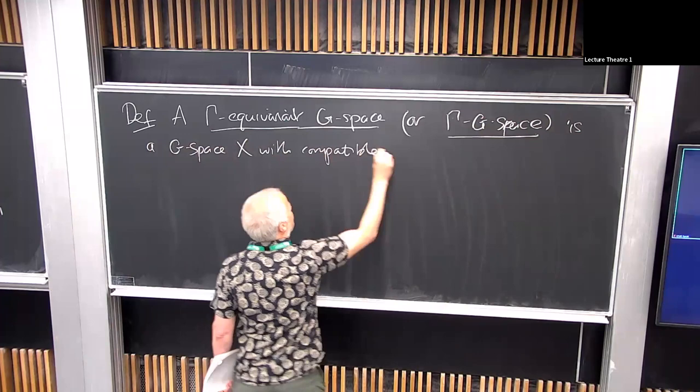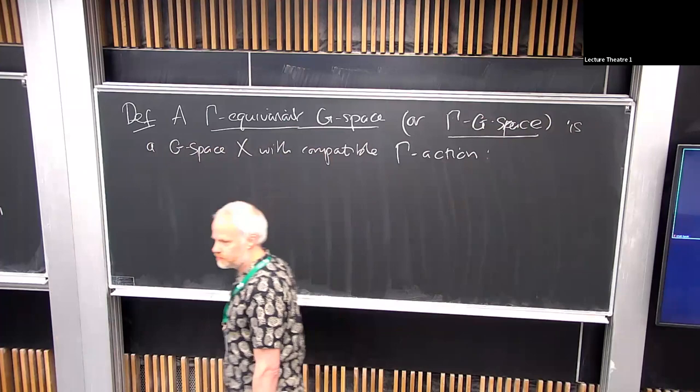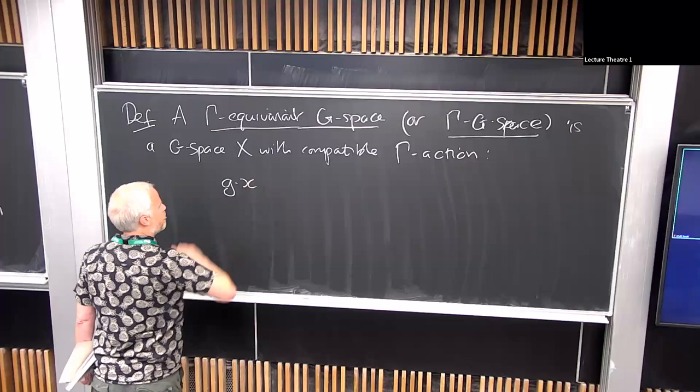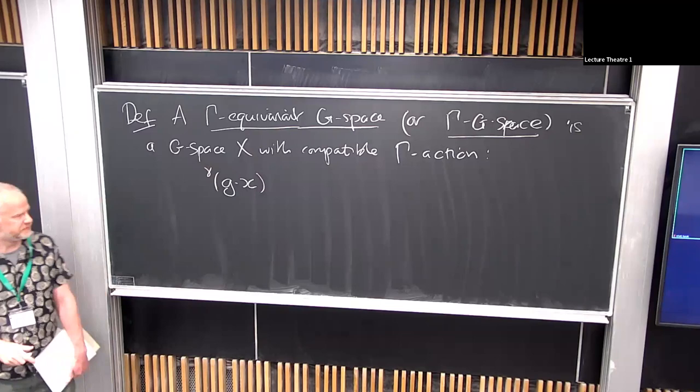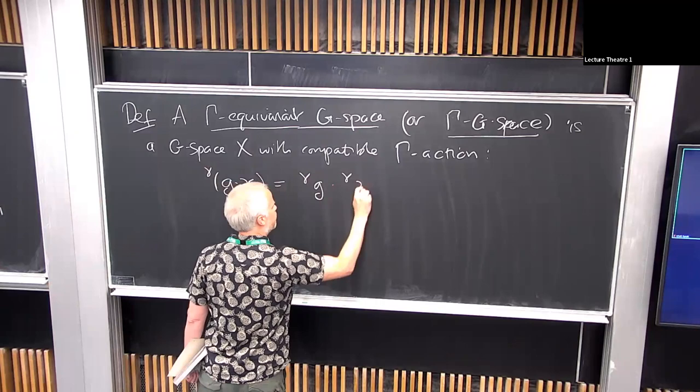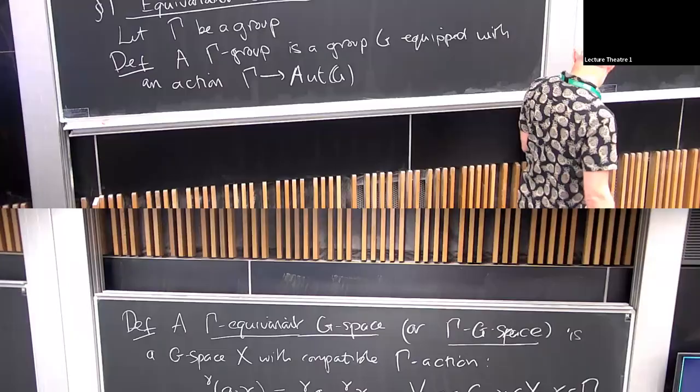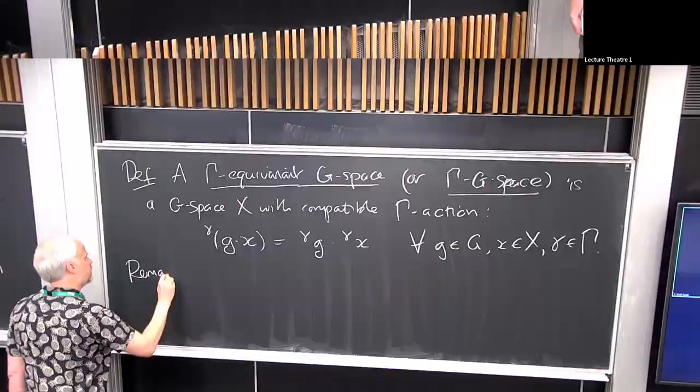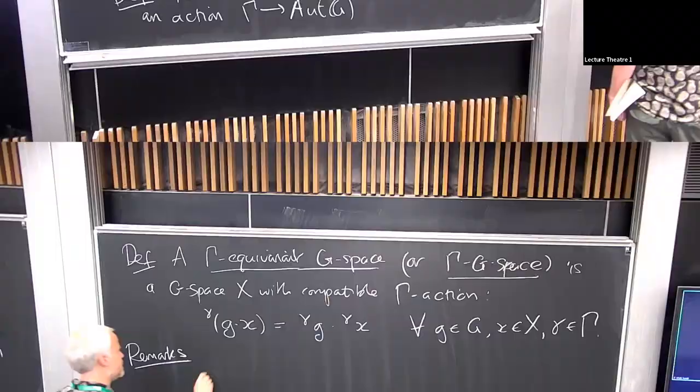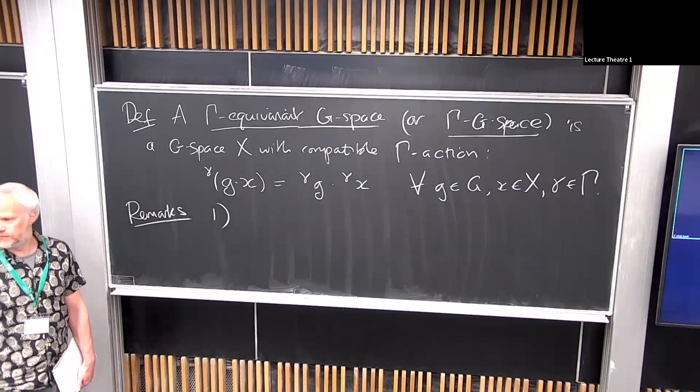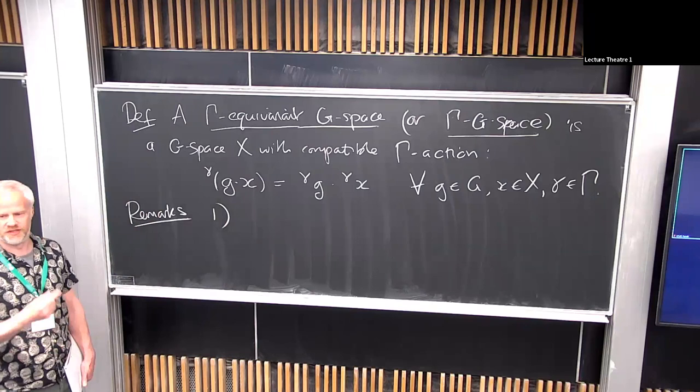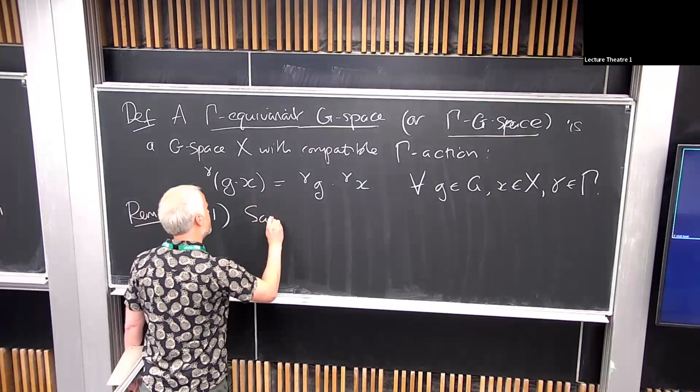I'm not going to put G in front of everything because G was already there. So I'm going to put gamma in front of everything. Gamma is a group, which will usually be finite. A gamma group is a group G equipped with an action of gamma, which I can think of as a fixed homomorphism to a group of automorphisms of G. And now I want to consider a gamma equivariant G space.